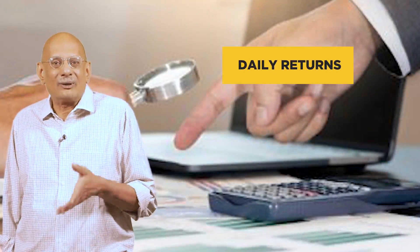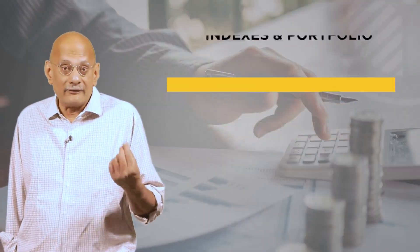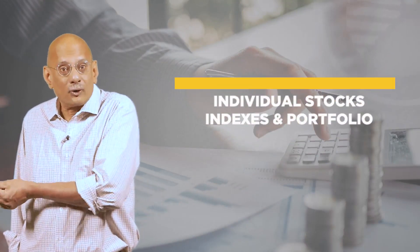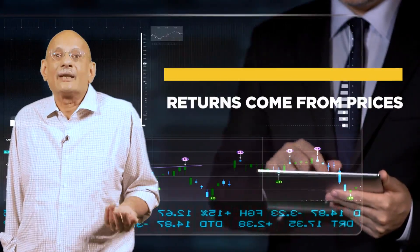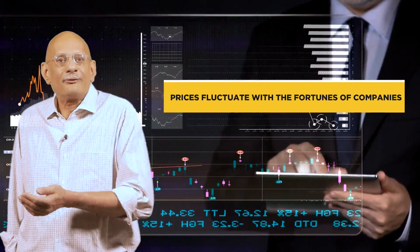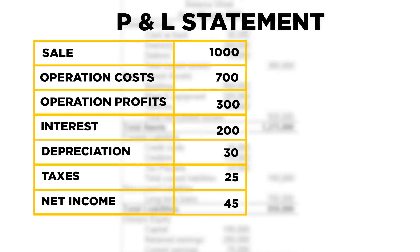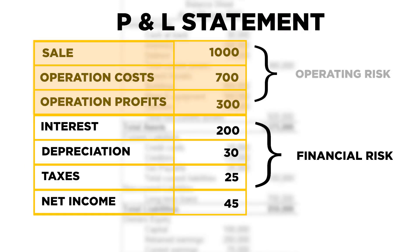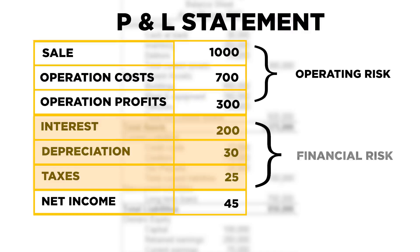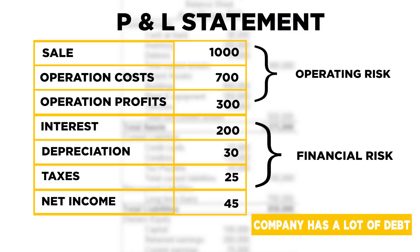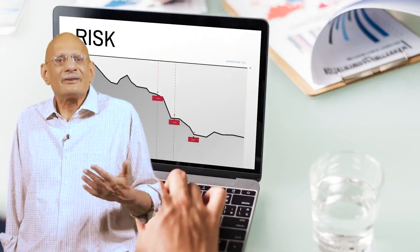Where do these risks come from? We can do these calculations with daily or monthly returns, and calculate returns and standard deviations for individual stocks as well as for indexes and portfolios. But think of the source: returns come from prices, and prices fluctuate with the fortunes of companies — more specifically, the quality of their earnings and the quantity of them. If you think of a simple profit and loss statement, the top portion reflects risks emanating from the operations of the company, while the lower half reflects risks that are more financial in nature — for instance, if a company has a lot of debt, the interest component in the P&L will be large.